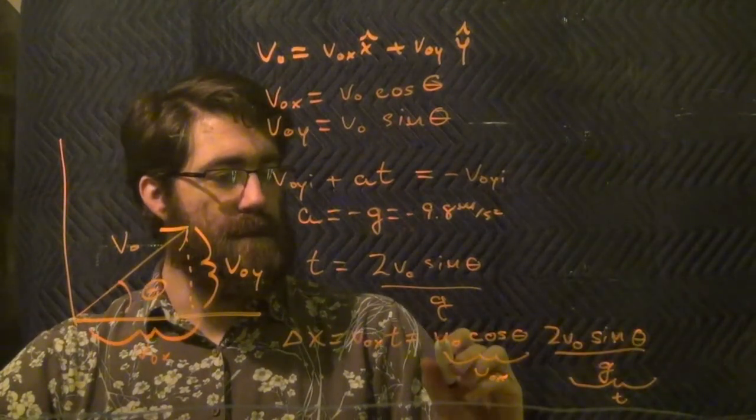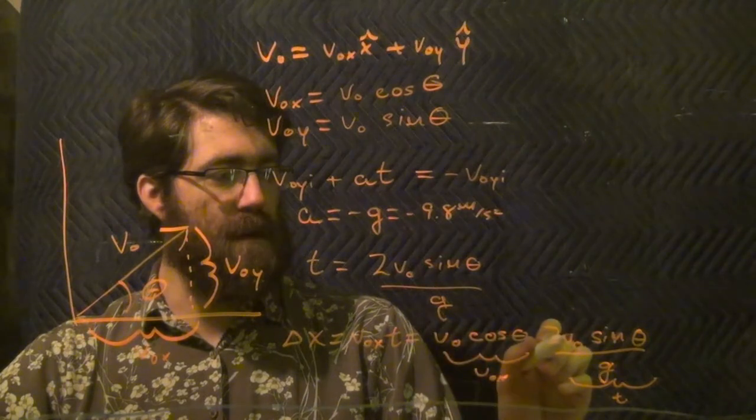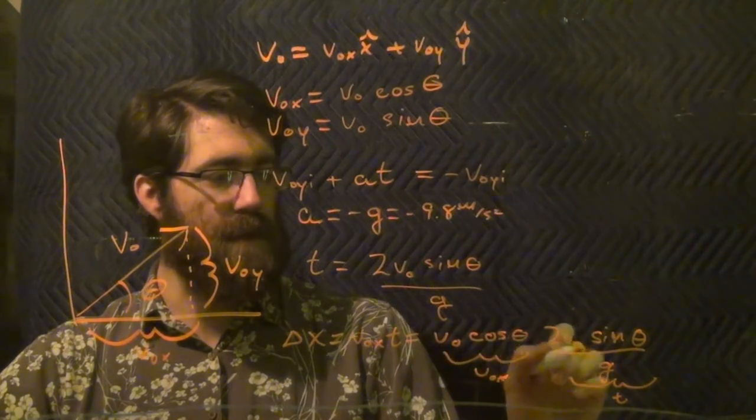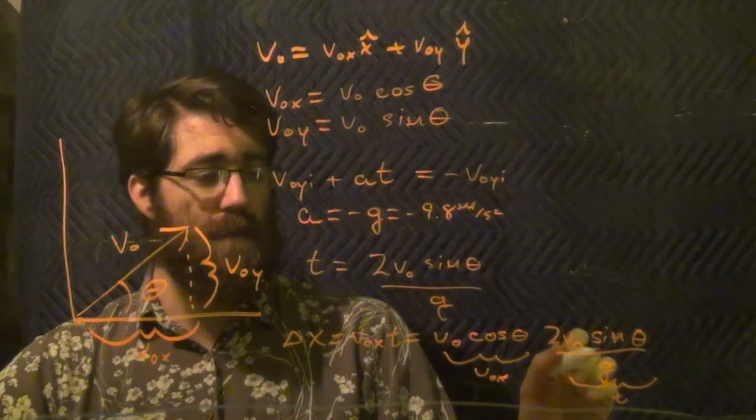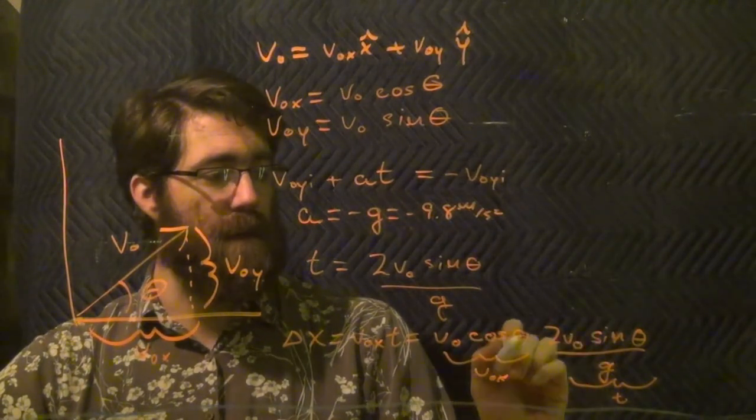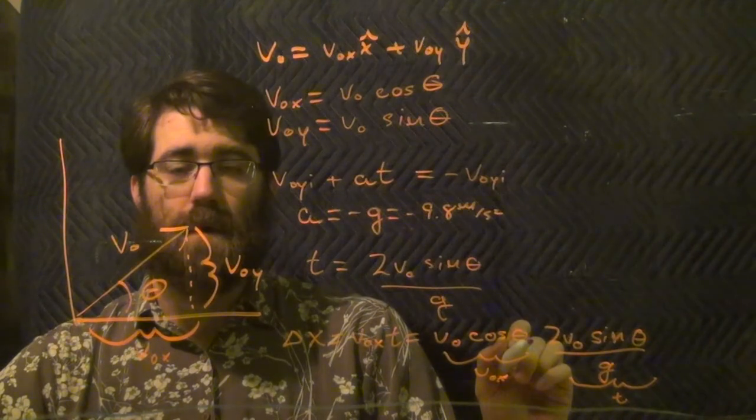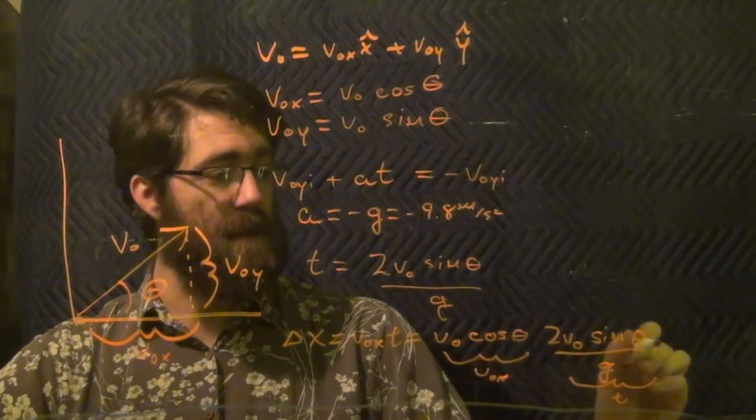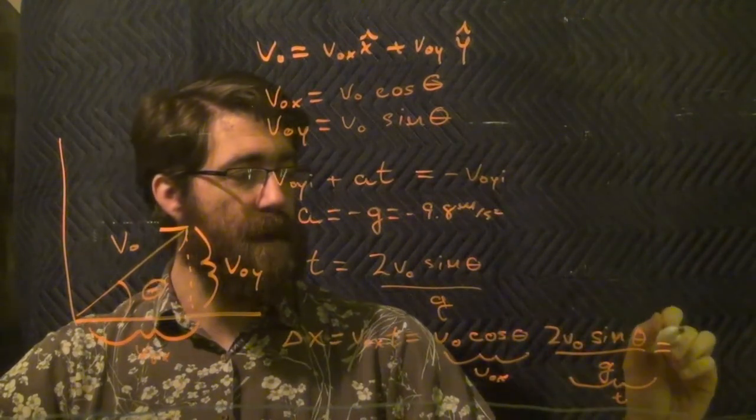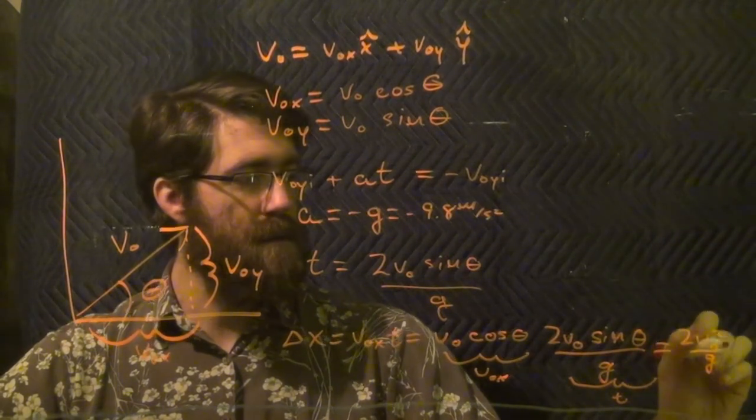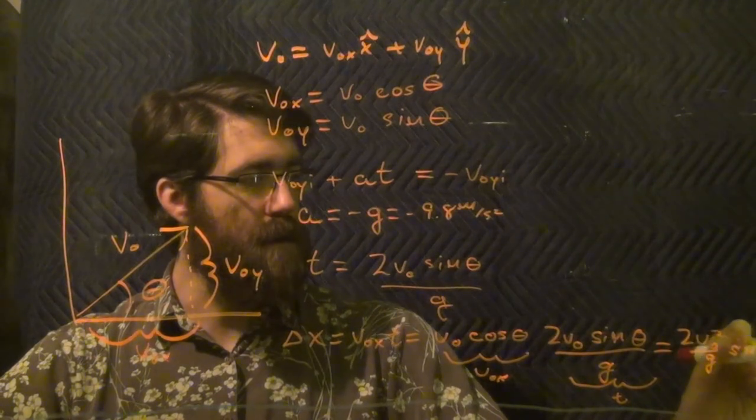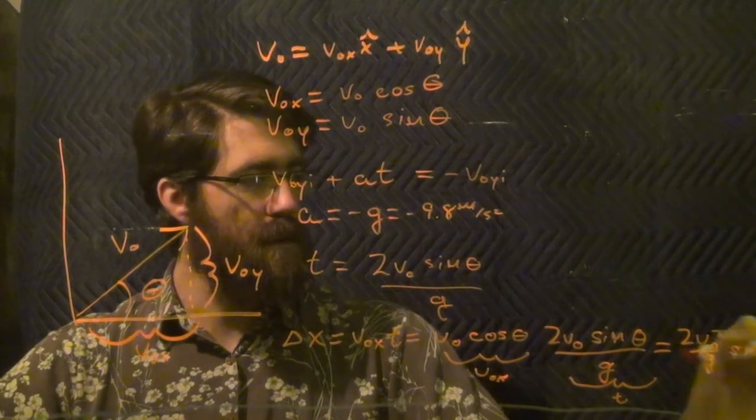Quick check of units: we have v-naught v-naught, which will be meters squared per second squared, over g, meters per second squared, means I'm left with meters. And the cosine and sine have no units, which means that dimensionally I'm in a good spot, with a final answer of 2 v-naught squared over g, sine theta cosine theta.